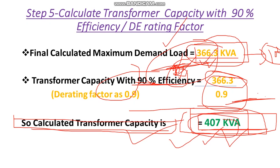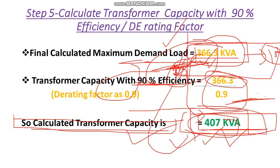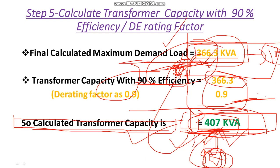Now if we connect the full maximum demand load of 366.3 kVA to this 407 kVA transformer, it means our transformer is operating at 90% load, which is the correct operating point. So 407 kVA is our calculated transformer size.